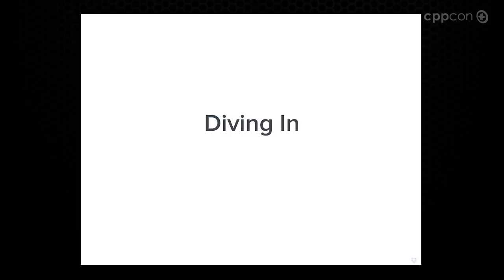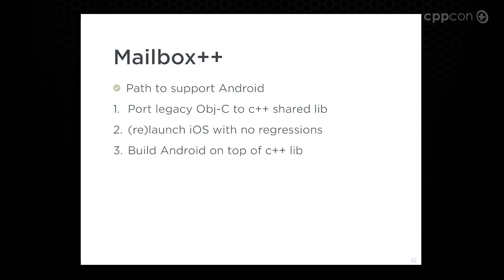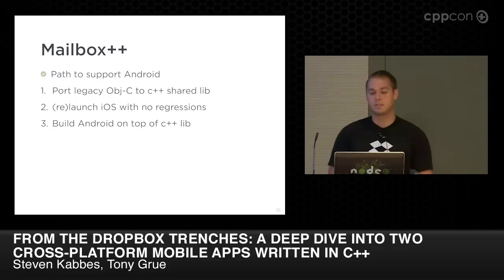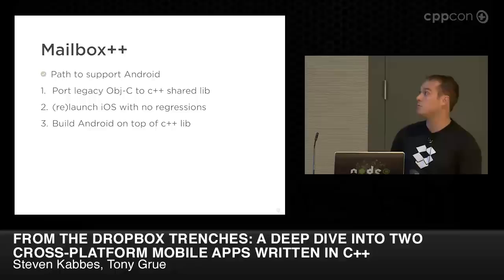So we're going to dive into a couple of examples — one specific to Mailbox and one specific to Carousel. For Mailbox, we had a slightly different goal than Carousel did initially. We had an entirely Objective-C app and we needed to port it to Android — that was our core goal. So we laid out at a high level what it took to get there, and it was three things: first, port all of our legacy Objective-C code into shiny new C++, which is a pretty straightforward process. Second, relaunch iOS with no regressions. And third, build Android on top of the shared C++ library.